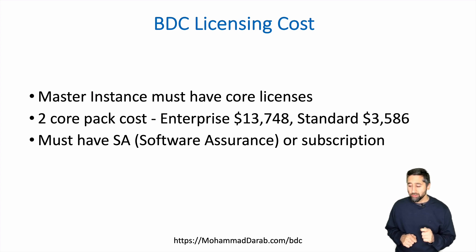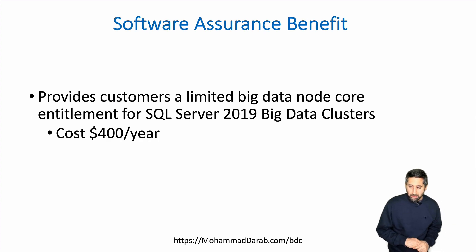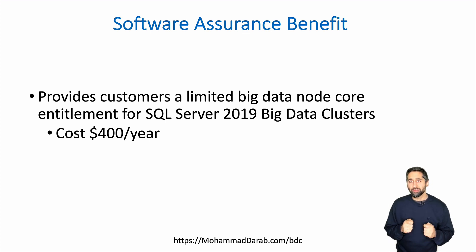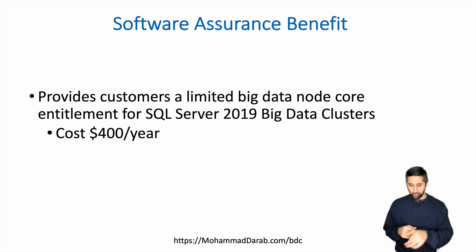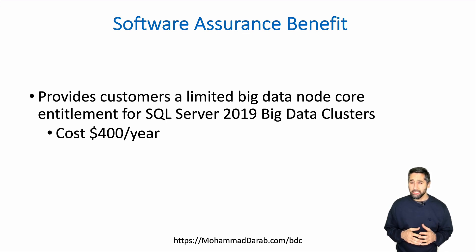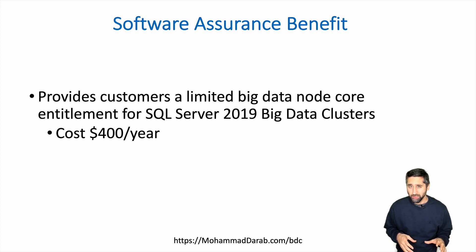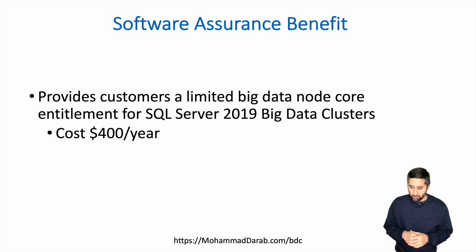The key thing is you must have software assurance or a subscription. The biggest benefit in terms of BDCs is that once you have software assurance, they give you something called a big data node entitlement. That means they give you a limited number of core licenses based on how many cores you've got for the master instance, at a cost of $400 a year for the big data node core license. Think of a big data node as any machine or node that is not the master instance — so the compute pool or storage pool nodes are your big data nodes.